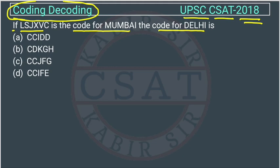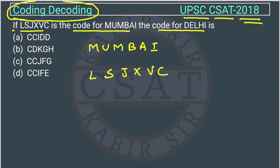Mumbai is coded as this. There are two ways we can write this: Mumbai is coded as this, or this is a code for Mumbai. So don't think it's vice versa — LSZ is not coded as Mumbai. Mumbai is coded as this way.